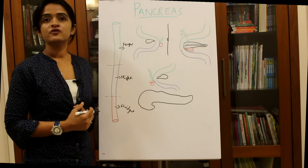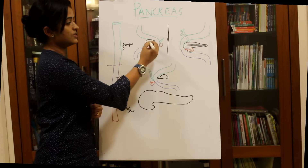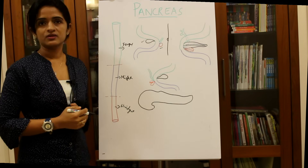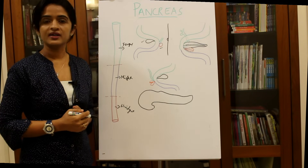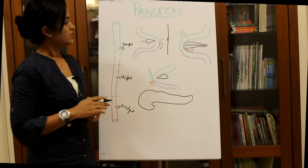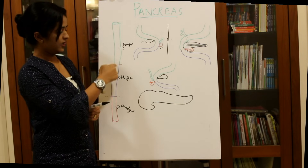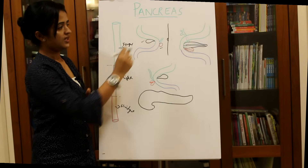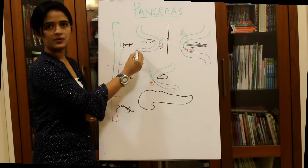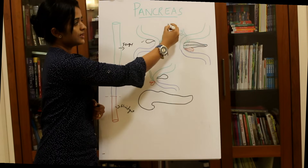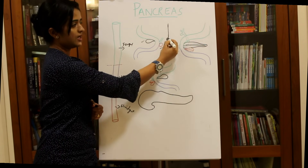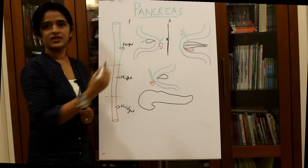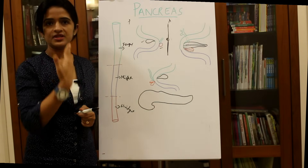The pancreas develops from two main buds: the dorsal bud and the ventral bud. The foregut and midgut regions form a C-shaped loop. Taking a sagittal section through the body and looking from the side, we have the anterior abdominal wall and the umbilicus, with this C-shaped loop oriented anteriorly and posteriorly.